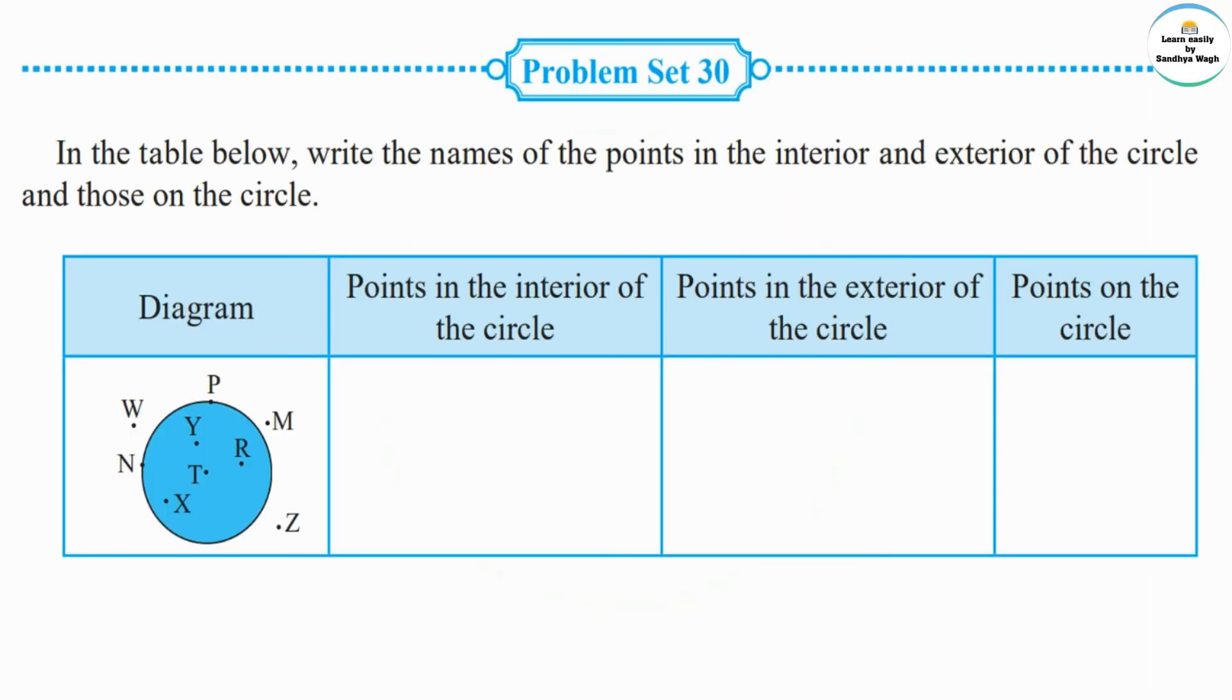Now let's solve problem set 30. In the table below, write the names of the points in the interior and exterior of the circle and those on the circle. Here, a table is given. There is a diagram - a circle is drawn with some points. The points are either in the circle's interior, in the circle's exterior, or on the circle.